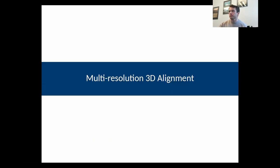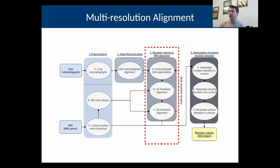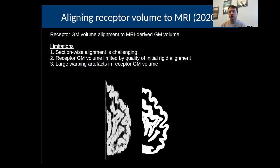The improvements that have been made in the third step, the alignment of the receptor volumes to the MRI, are significant. What I was doing last time we met was basically just taking the initial receptor volume where all the autoradiographs are aligned to one another, segmenting it into a gray matter mask, and then aligning that to the donor MRI.